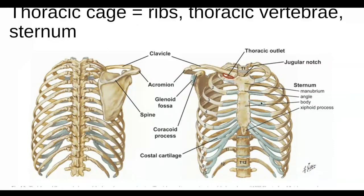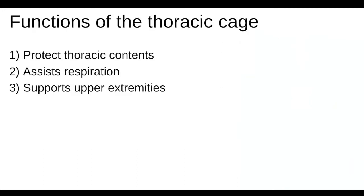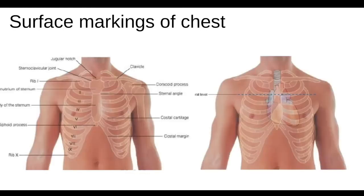The purpose of the rib cage is to contain the contents of the chest — primarily the heart and lungs, but also important vessels. The sternum has three main parts: the manubrium at the top, the body where costal cartilage articulates with seven notches for the true ribs, and the xiphoid process at the bottom. Functions of the thoracic cage include protecting thoracic contents, assisting with respiration, and providing structural support for the upper extremities.